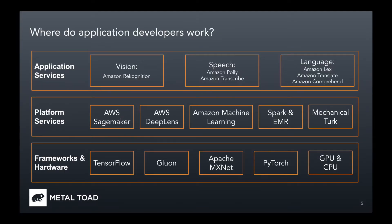Let's take a step back and look at the context. What is Amazon Machine Learning? Amazon Machine Learning is a broad and deep set of machine learning services and supporting cloud infrastructure that puts machine learning into the hands of every developer, data scientist, and expert practitioner. There's something for everyone in the AWS ecosystem.